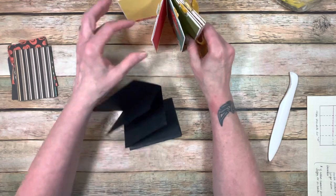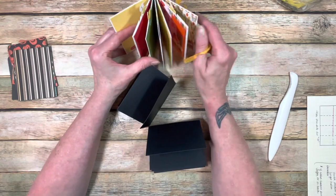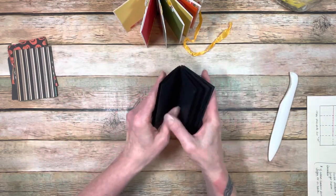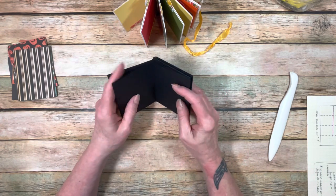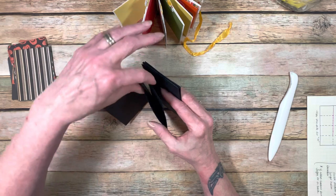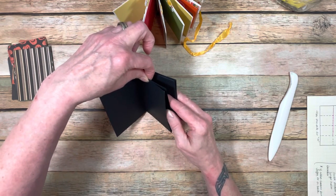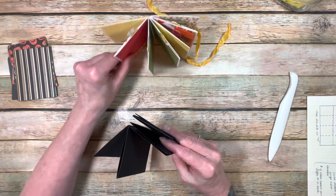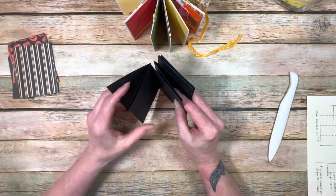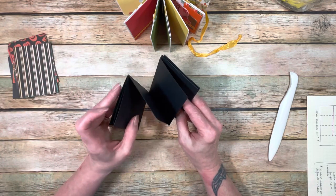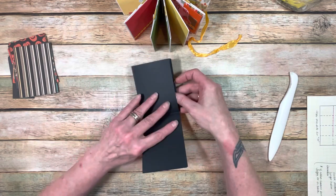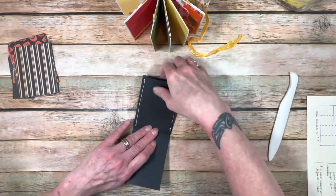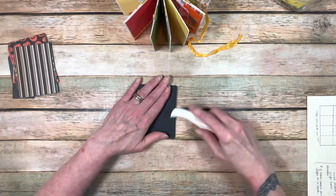You're just going to keep continuing to do that. I chose to make all of my pockets top loading because I wanted the seam binding closure. You can do a side loading pocket as well. We have our first page, then we've created this top loading pocket. If you want this one to be side loading, then just glue it here and you can have the tags sticking out. I'm going to create a top loading pocket. Keep your orientation, fold it down, and just glue up the sides like so. Then fold that down and burnish it.